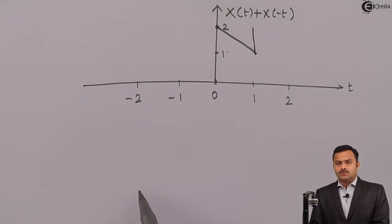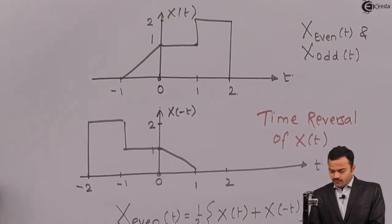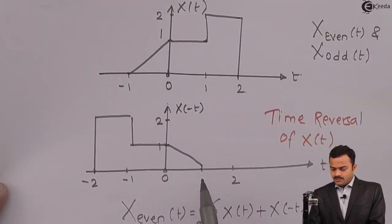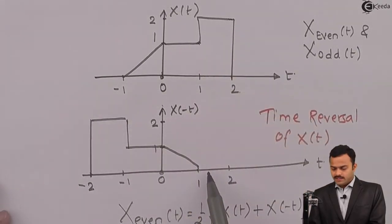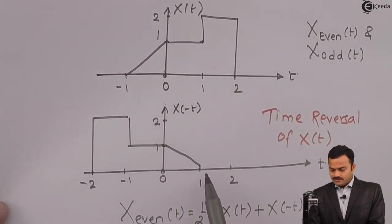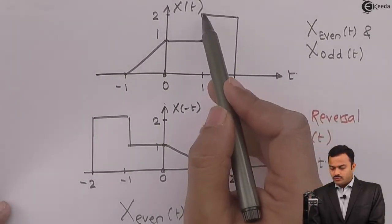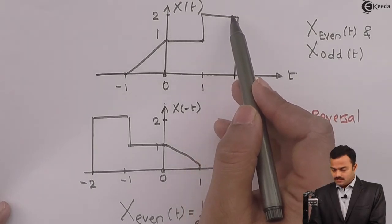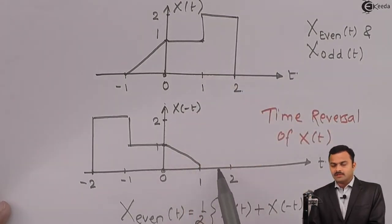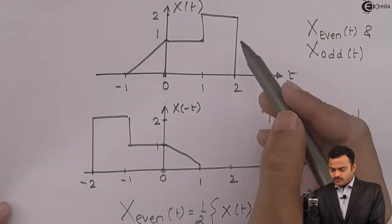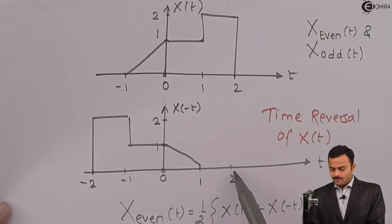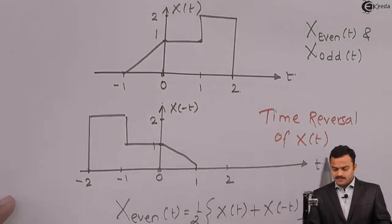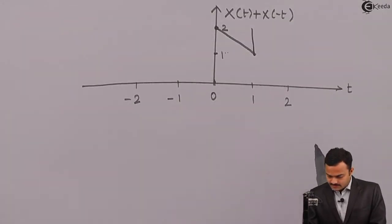From one to two, here the slope is zero, and here also the slope is zero. So in the end, zero slope but it's a constant value of two. Here it is zero, so addition will become two. And at t equal to two, it is reaching to zero, meaning the resultant should drop accordingly.